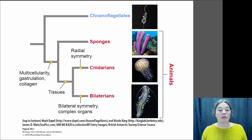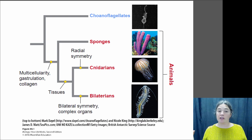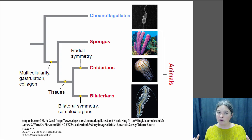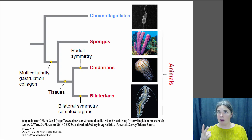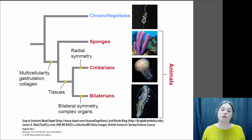The next step is the evolution of tissues. Sponges have specialized cells but not specialized tissues. Animals that have specialized tissues can be divided into two groups: the cnidarians and the bilaterians. The cnidarians have only two types of embryonic tissues — they're diploblastic — whereas the bilaterians have three types of embryonic tissues; they are triploblastic.